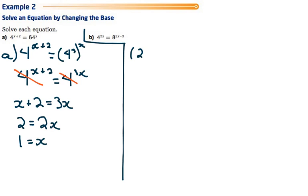4 becomes 2 squared, which had the exponent of 2x on it. 8 becomes 2 cubed, which had an exponent of 2x minus 3 on it.